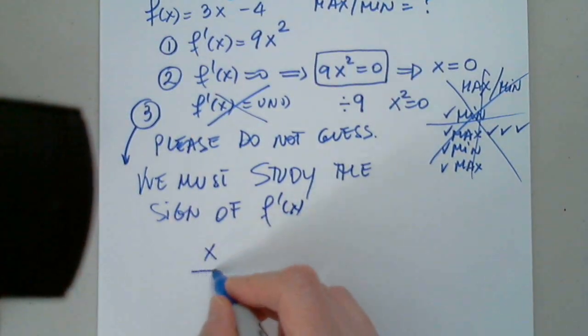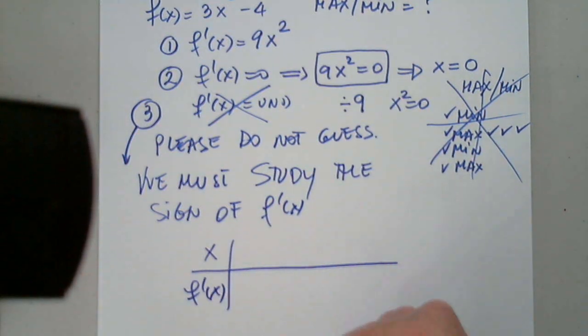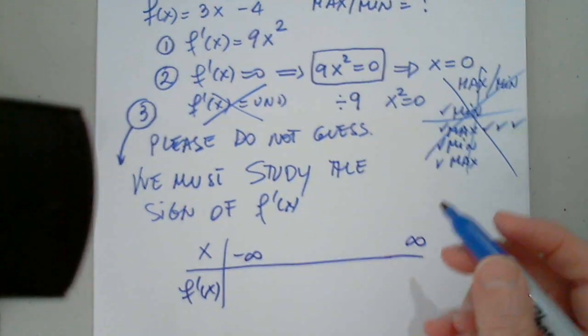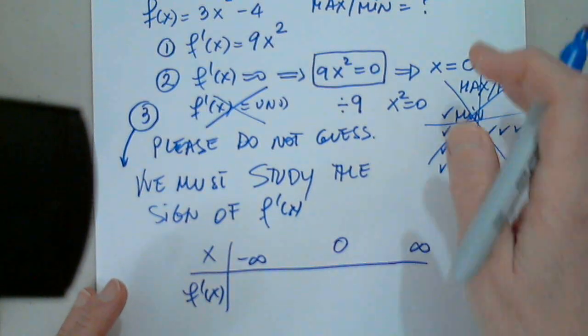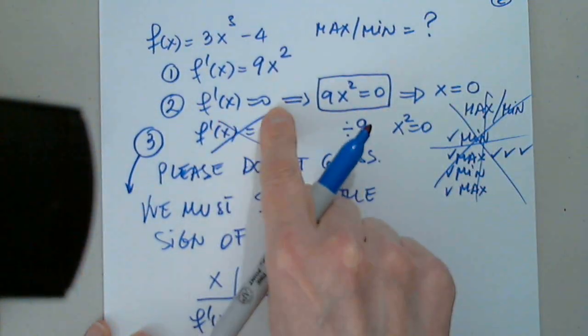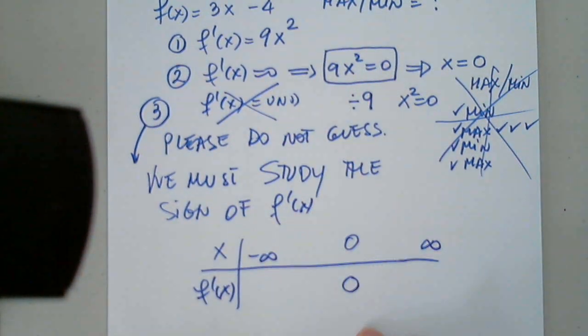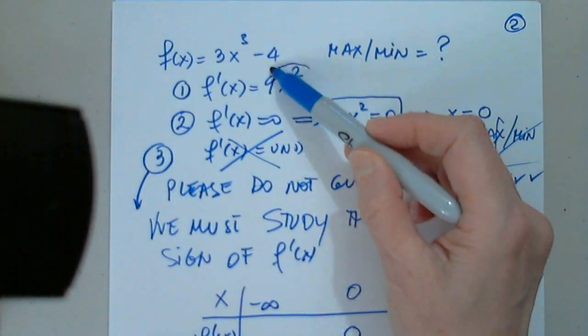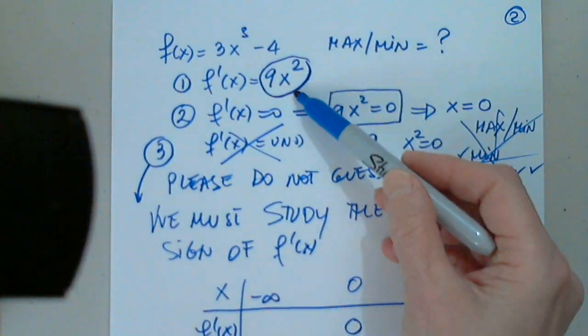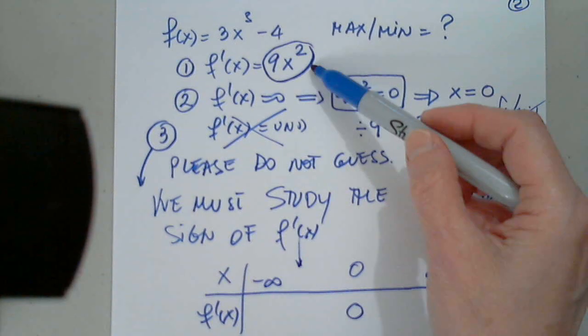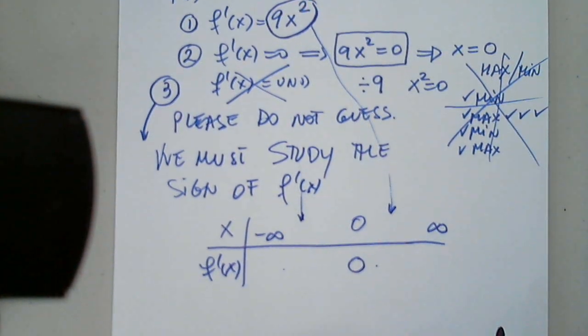We must study the sign of f prime. If it does not change sign at 0, all this is gibberish. Useless. So x, f prime of x, negative infinity to infinity, is 0. At 0, f prime is 0. Here is f prime. Please plug in a number to the left of 0, and plug in a number to the right of 0, and tell me the sign.